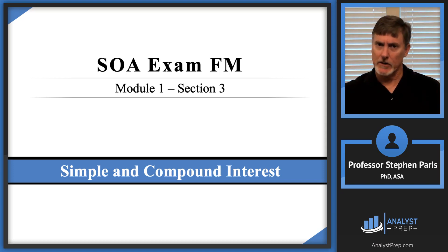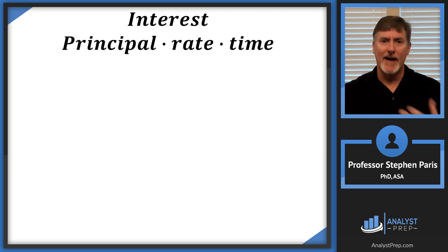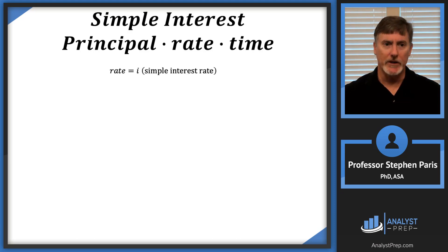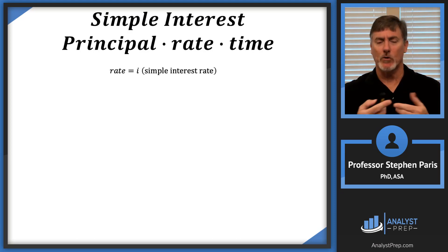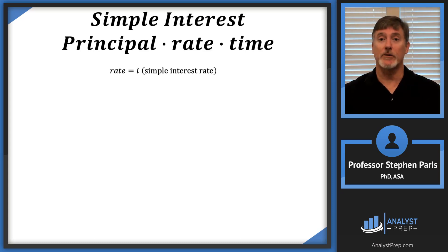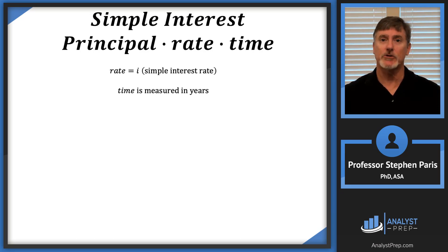So let's get going. Whether you're dealing with simple interest or compound interest, the amount of interest that we calculate is based on this formula: principal times rate times time. With simple interest, the rate — you've probably seen it as an R — but I'm going to use an I as the rate, because that's what you're going to see on the actual exams, and you'll be told it's a simple interest rate. Once you're told it's a simple interest rate, the time needs to be measured in years.